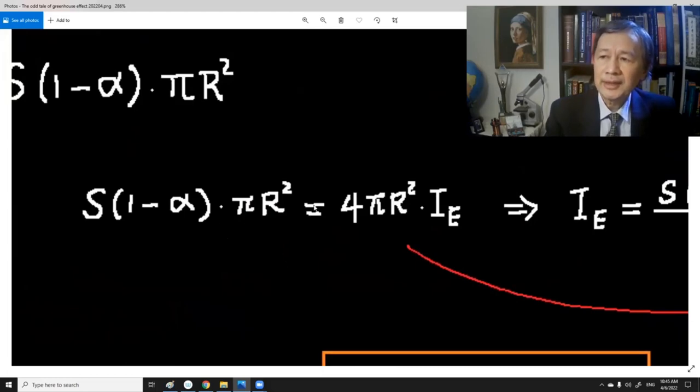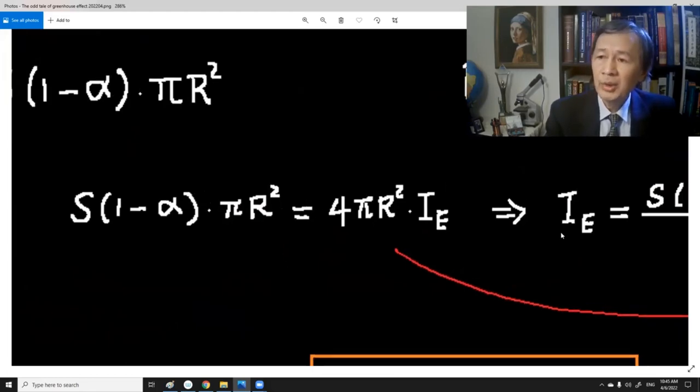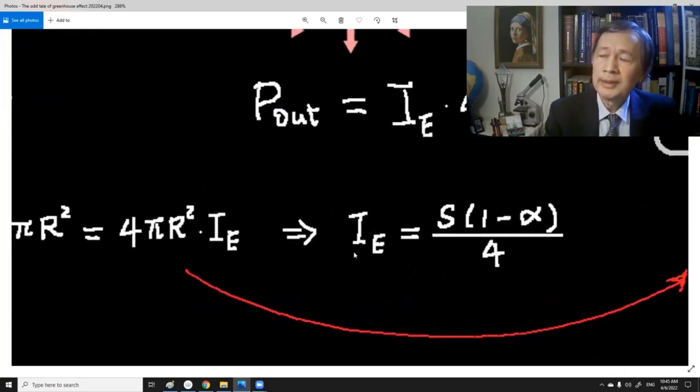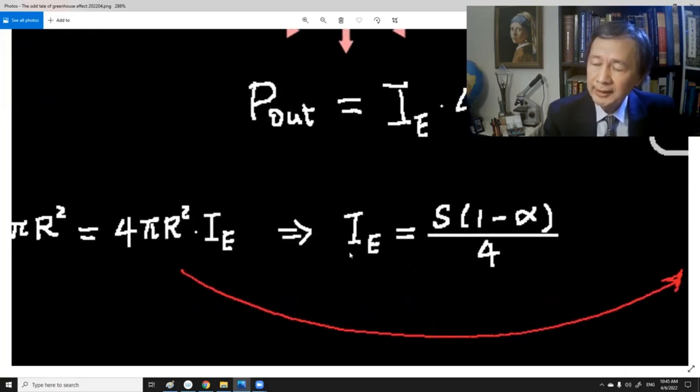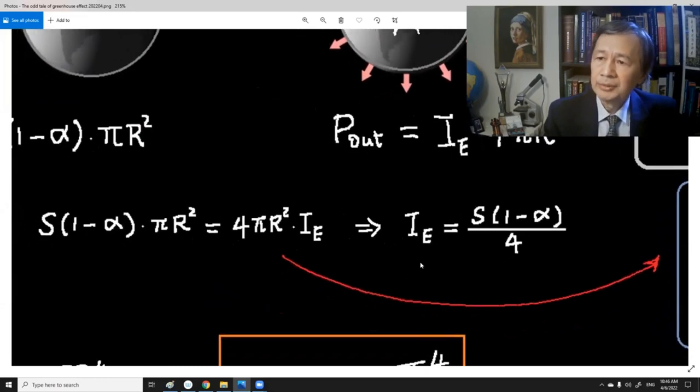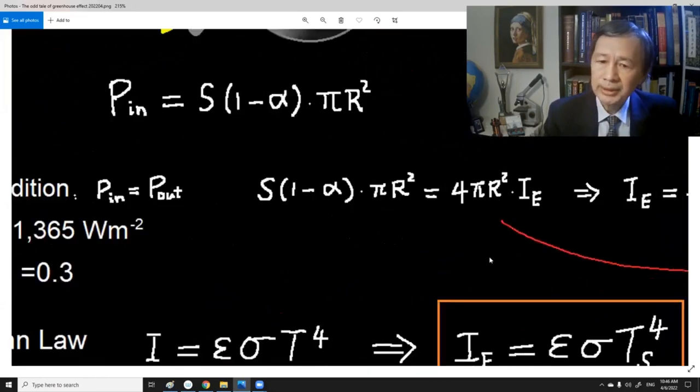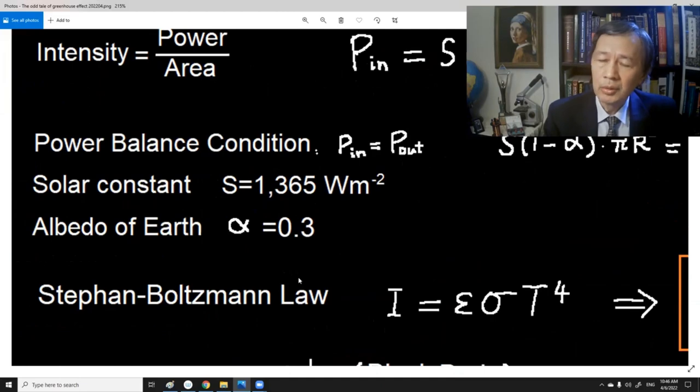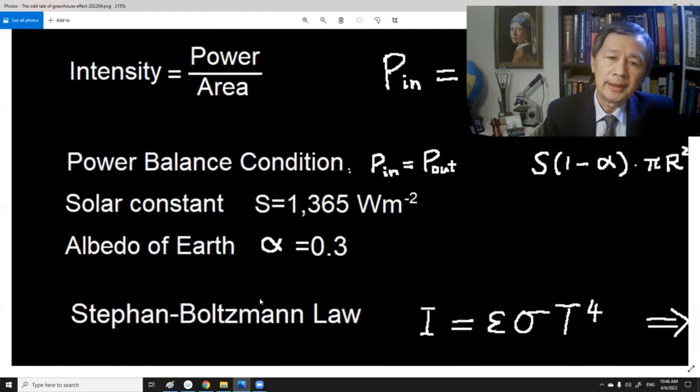So that is why we can obtain this so-called power balance equation. If we just simplify this equation, we can solve for the radiation intensity of earth. This subscript E represents earth. What else can we do? Well, in history, there is a famous empirical law, it is called the Stefan-Boltzmann law.